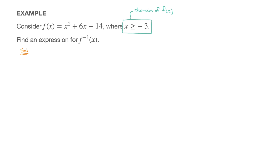To find this function's inverse, we proceed as follows. I'll start by copying that function, but instead of writing f of x, I'll write y equals x squared plus 6x minus 14. For quadratics, we can follow three steps. Step one is simply to swap x and y. We're going to copy this function and replace every x we see by y, and the y we see here by x. So that gives us: x equals y squared plus 6y minus 14. That's step one done.